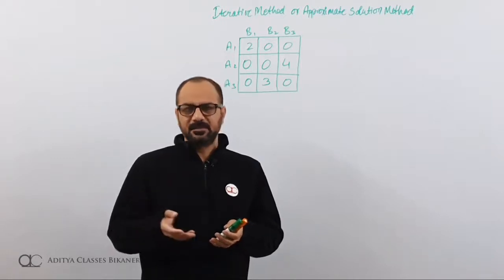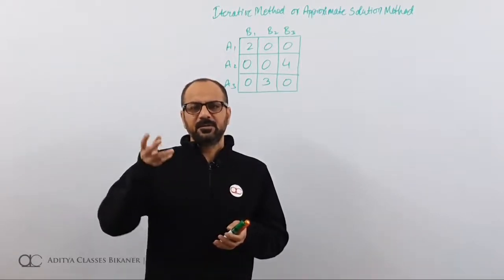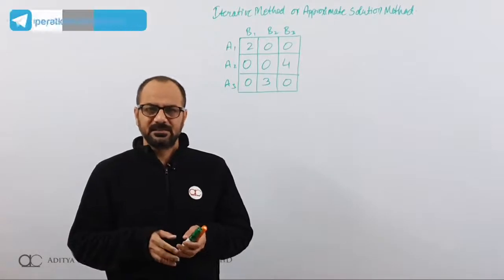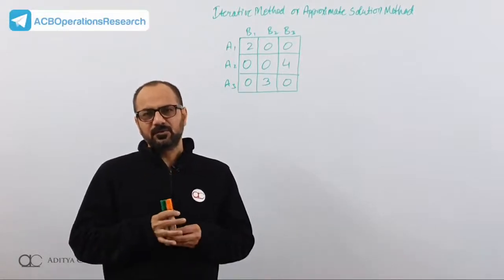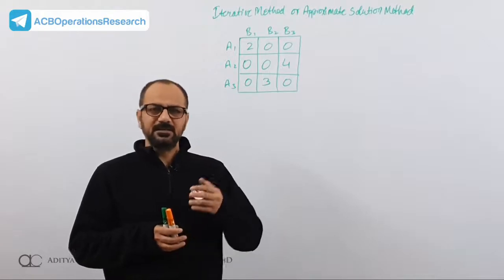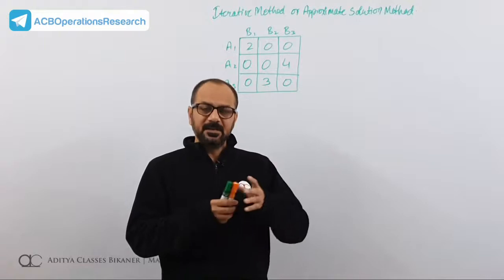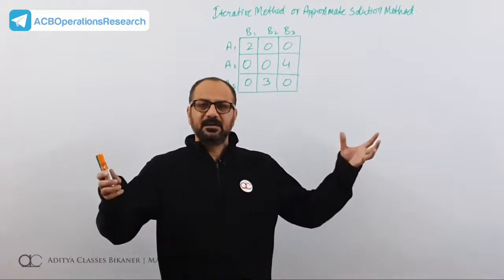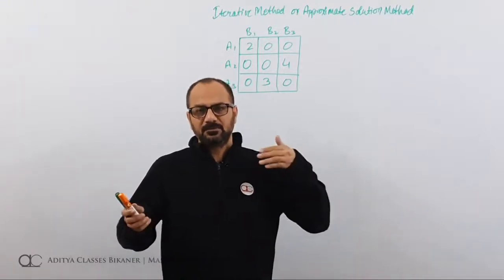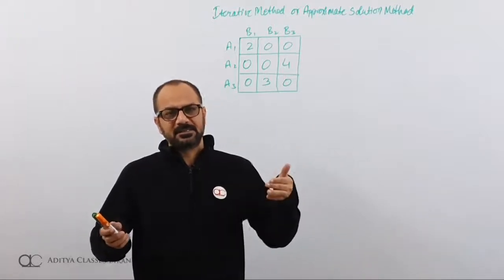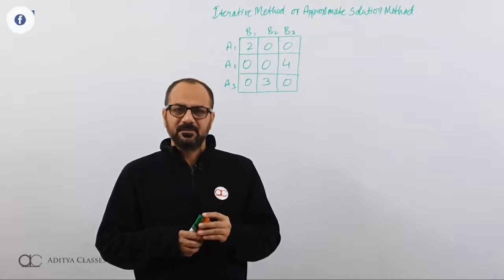Then we talked about unstable games — games where players keep switching their strategies. For unstable games, if the game reduces down to 2×2, we can easily solve it using the ornament method or algebraic method. But if the game remains greater than 2×2, that is 2×n or m×2, then you need to move to other strategies: graphical method or method of sub-games.